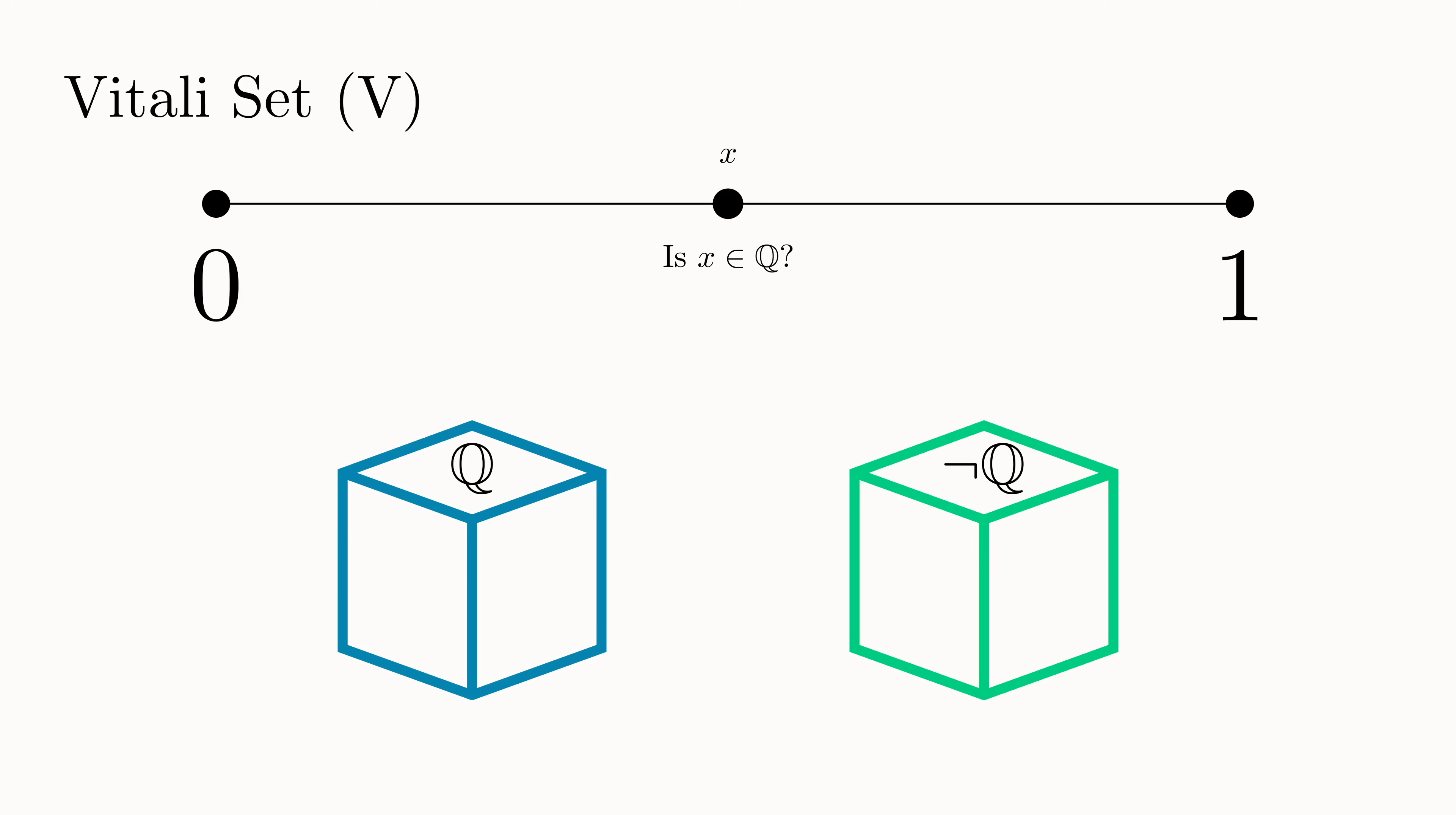We'll first sort the numbers based on whether they are rational or not, so any number that can be written as a ratio of whole numbers will go in the blue box. And any number that can't be written in this way will go in the green box. And we apply this sorting procedure to the entire interval.